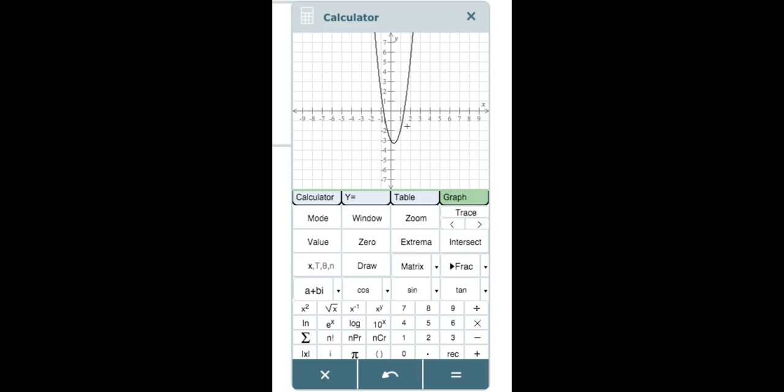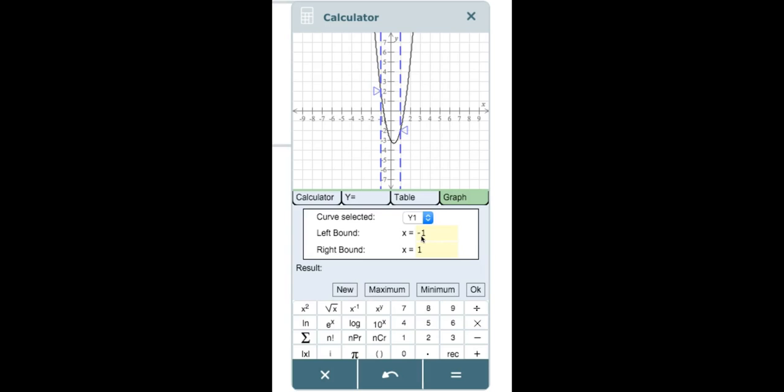Using this information we will now click on the button labeled extrema, enter the left bound x = -1 and the right bound x = 1. Next we will click on minimum. We can see here that it tells us that the vertex is located at (0.33, -3.33).